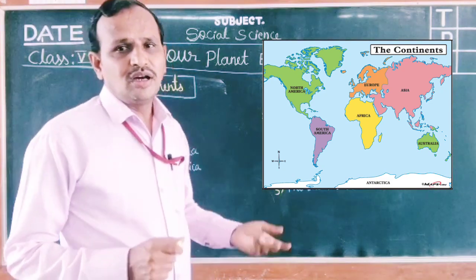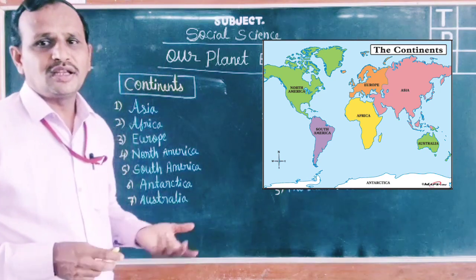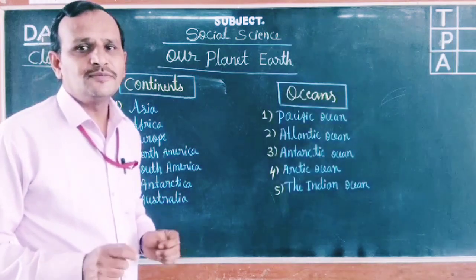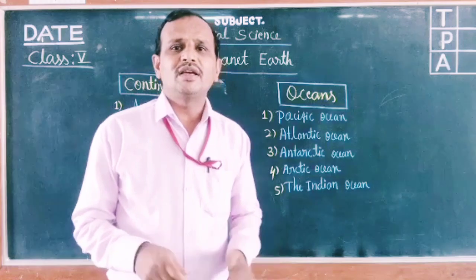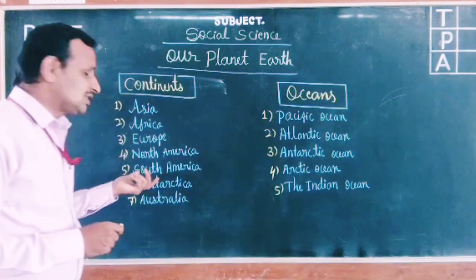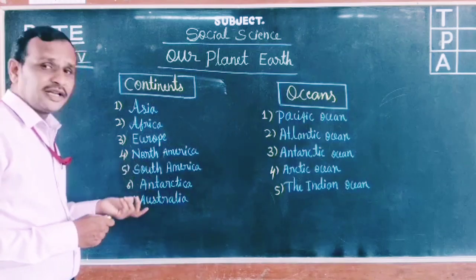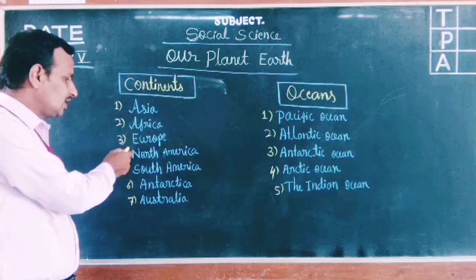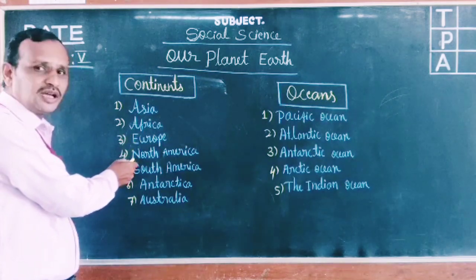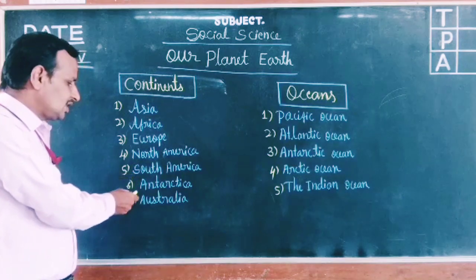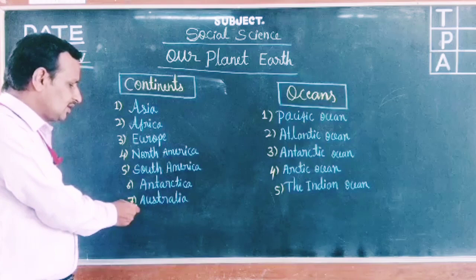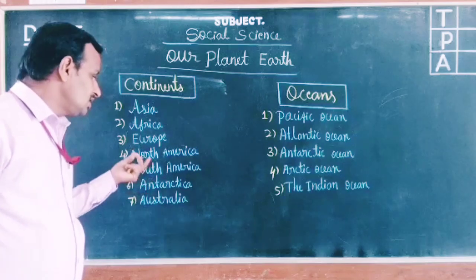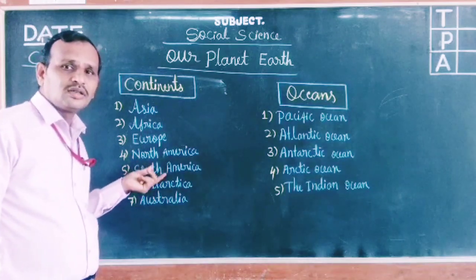On the Earth's surface, there are seven continents. They are namely: the first is Asia, the second is Africa, the third is Europe, the fourth is North America, the fifth is South America, the sixth is Antarctica, and the seventh is Australia. These are the seven continents covered on the Earth's surface.